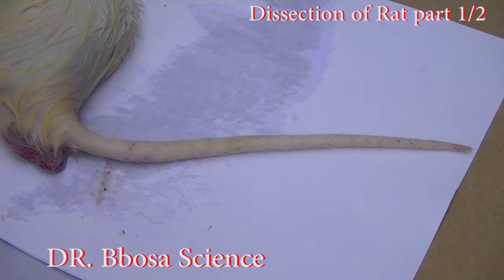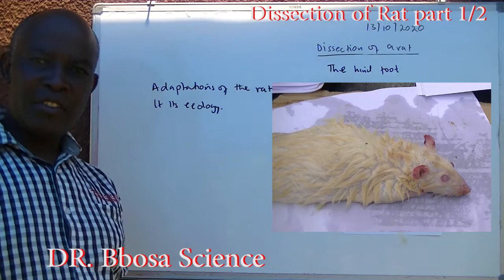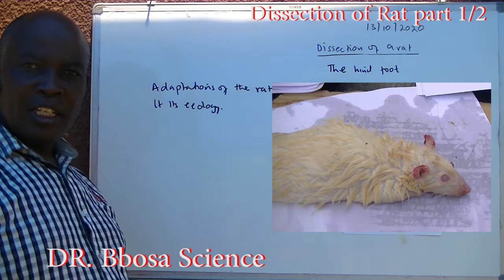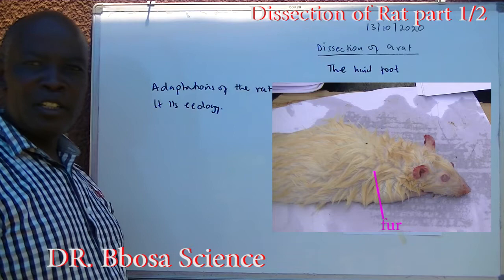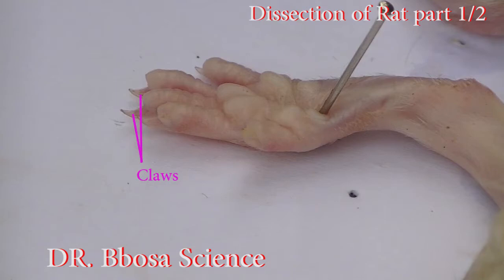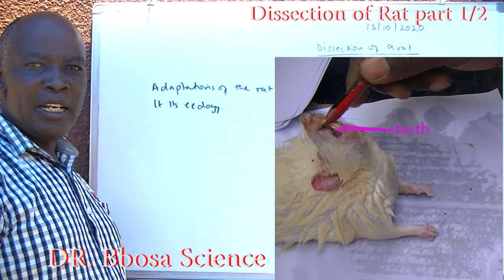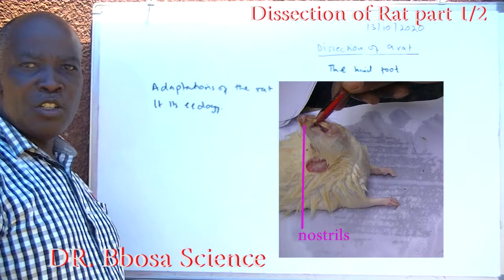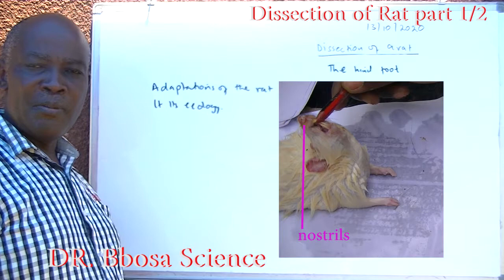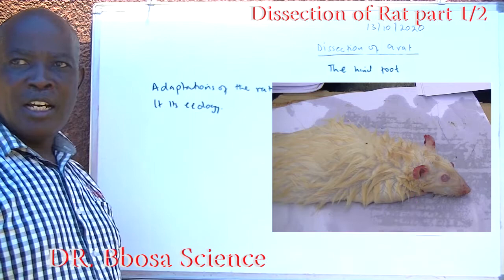You may be required to give adaptations of the rat to its ecology. Anything that allows the rat to live a successful life can be given as an ecological adaptation. For example: it has fur for protection and insulation against cold environments; it has legs for locomotion; it has claws to scratch the enemy; it has teeth to bite and chew food and to bite the enemy; it has eyes to see the enemy; it has nostrils to smell food and to smell the presence of the enemy; it has ears to collect sound waves.